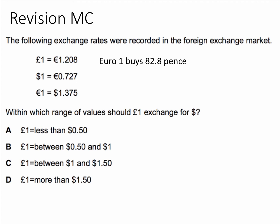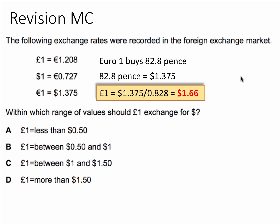We also know that one euro buys $1.375, so we can substitute 82.8 pence into that one euro space. So 82.8 pence will buy $1.375, and therefore we need to convert to find what one pound will buy. One pound will be $1.375 divided by 0.828, which gives $1.66.